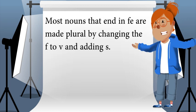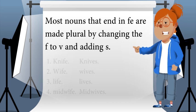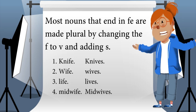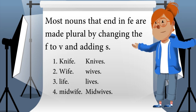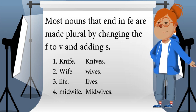Most nouns that end in fe are made plural by changing the f to v and adding s. Knife becomes knives, wife becomes wives, life becomes lives, midwife becomes midwives.